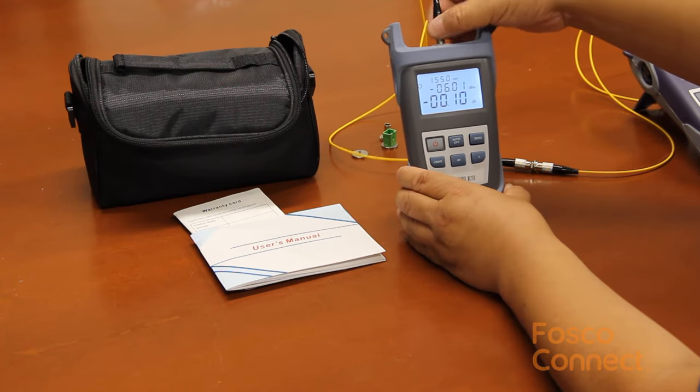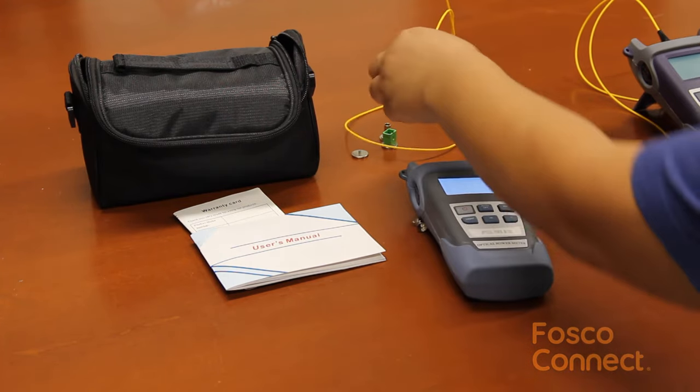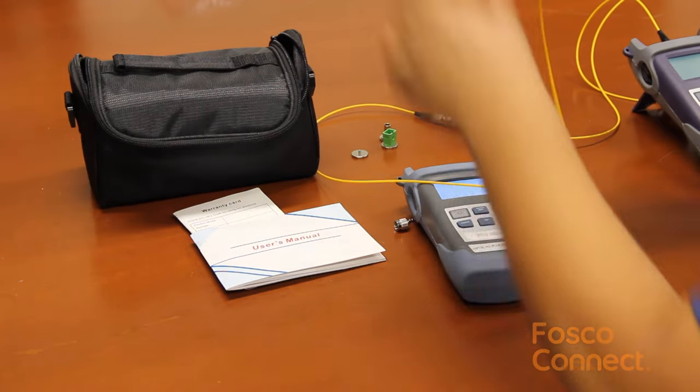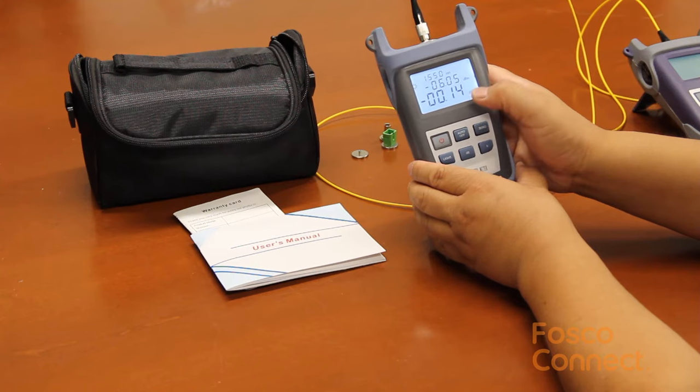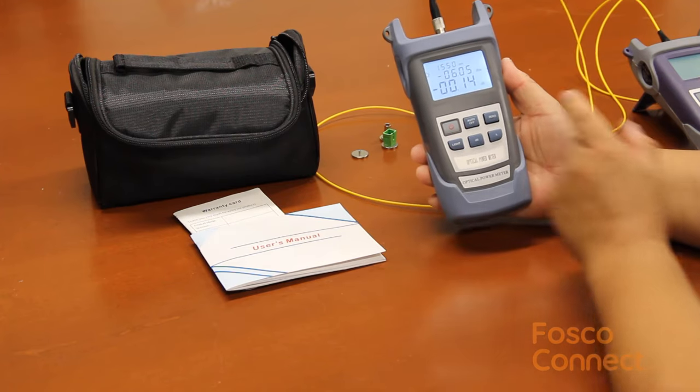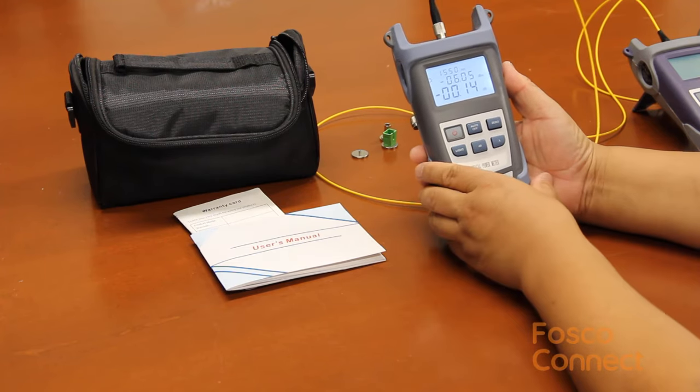Now let's reverse the fiber jumper cable connector to make sure both connectors are good. This time it reads as negative 0.14 dB, which is within tolerance.